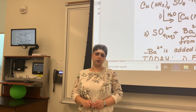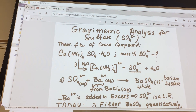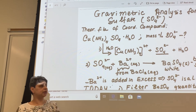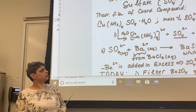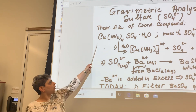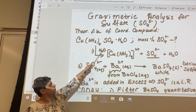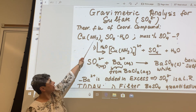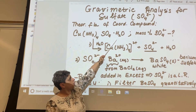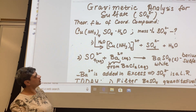So we're going to talk today about gravimetric analysis for sulfate. It's a procedure that's an extension of what you did before break. Just a quick reminder: several weeks ago you prepared this copper coordination compound called tetramine copper sulfate monohydrate and you saved it in your vial.